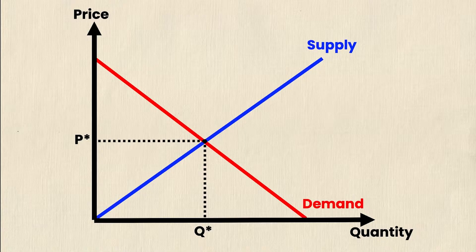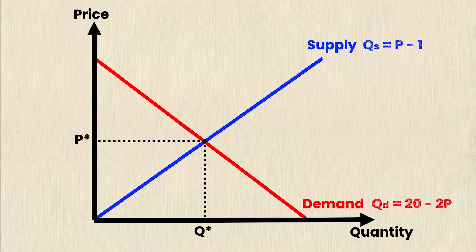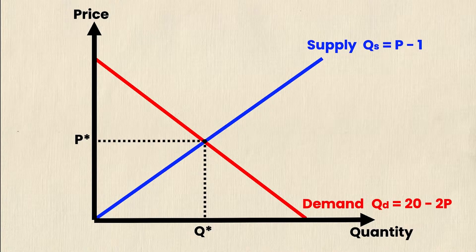So if I'm going to be doing this with real numbers, then I need the actual supply and demand equations that correspond to these lines, and they are right here. So quantity supplied is equal to p minus 4, and quantity demanded is equal to 20 minus 2p.